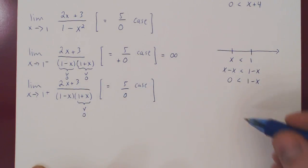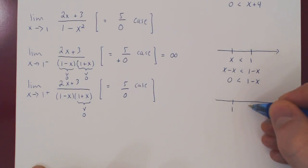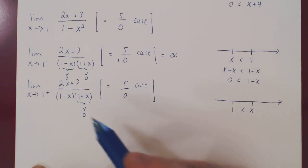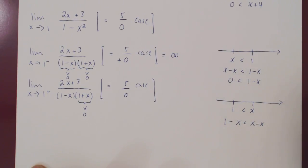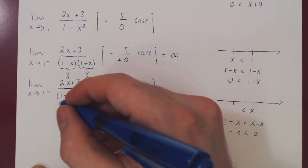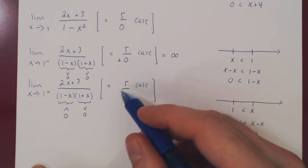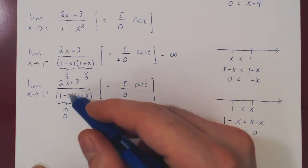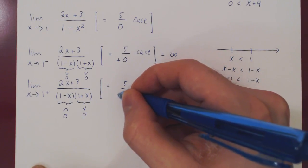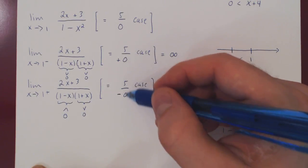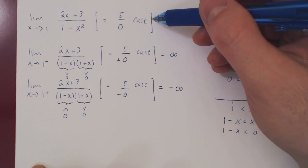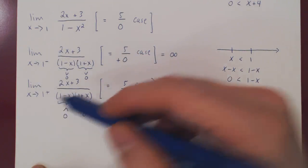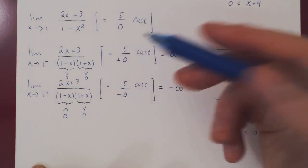Now the limit from the right: x is slightly bigger than 1. Again considering (1 - x): subtracting x from both sides gives 1 - x < 0, so 1 - x is negative. Our denominator is the product of a negative and a positive, so the result is negative — a 5 over negative 0 case, which gives negative infinity. Going back to the original limit, the two limits from the left and right are different, so the best we can say is that this limit is undefined.